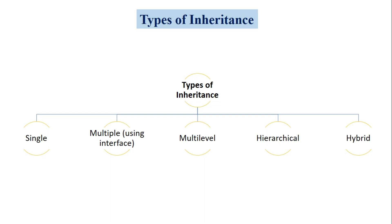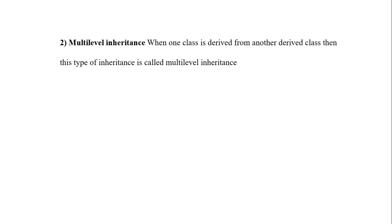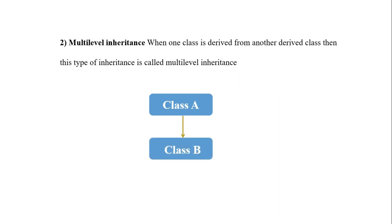Multilevel inheritance means when a class is derived from another derived class, this type of inheritance is called multilevel inheritance. For example, class A is the base class, from class A we derive class B, and from class B we derive class C. Class B is a child of class A and a parent of class C. When one class is derived from another derived class, that is called multilevel inheritance.